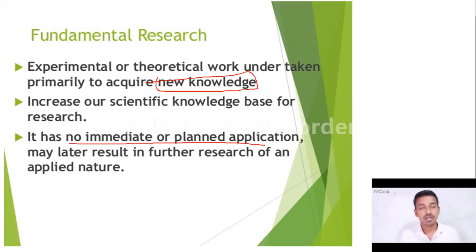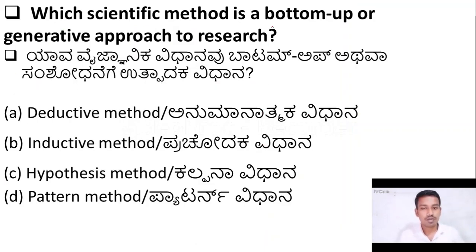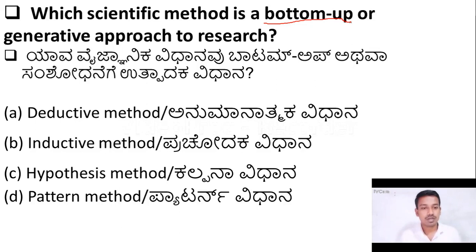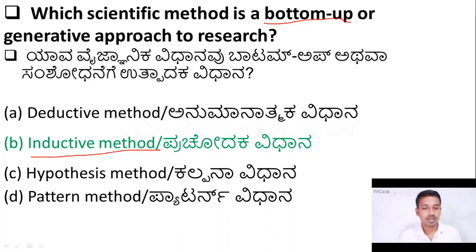It may later result in further research. The next question: which scientific method is a bottom-up approach or generative approach to research? Options: deductive method, inductive method, hypothesis method, pattern method. The right answer is the inductive method, known as the bottom-up approach. The deductive method is known as the top-down approach.